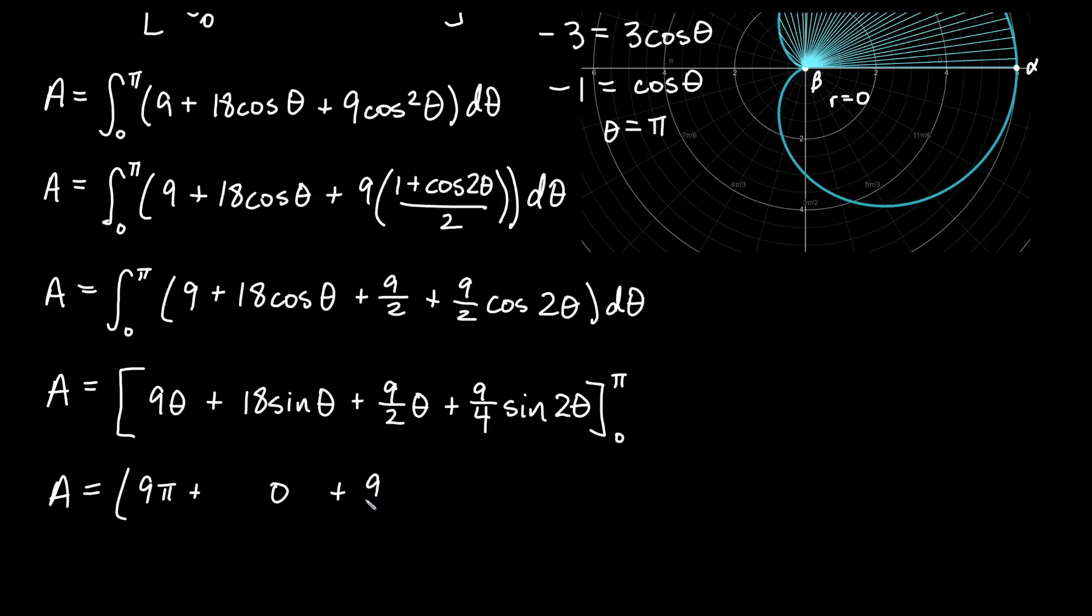Plus 9 halves pi plus 9 fourths times sine of 2 theta. If I plug in pi, that would be 2 pi, and sine of 2 pi is 0, so this would also be 0.